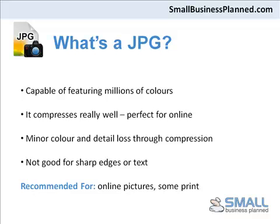First of all, what's a JPEG? You've probably heard of a JPEG before as it's the most common image format found online. It's capable of featuring millions of colours — upwards of 16 million. The file format compresses really well, which is perfect for online where page loading times are so important. When you save, you will get some minor colour and detail loss through the compression mechanism. This also isn't the best for displaying sharp edges, lines or text — there will be some fuzziness around these edges. Overall, a JPEG is perfect for displaying online pictures and also some print applications.